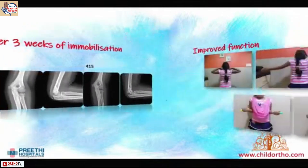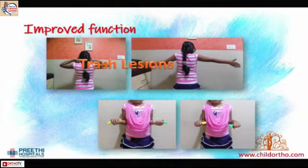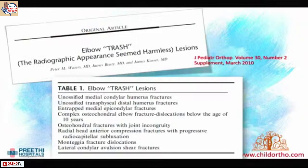That is why, when the first x-ray is normal but your clinical signs tell you there is a significant injury, these lesions are known as TRASH lesions. TRASH is an acronym for Trivial Radiological Appearance Seeming Harmless — a very twisted term that basically tells you that sometimes the injury is so subtle that you need something more than an x-ray. This list of injuries was described by Dr. Peter Waters in his paper in JPON in 2010. Most of these injuries are fairly common but when they are subtle we tend to miss them.